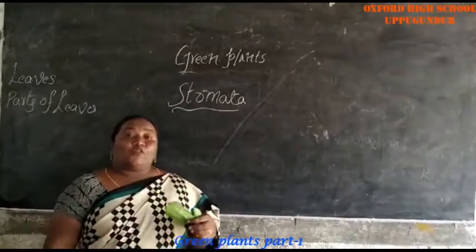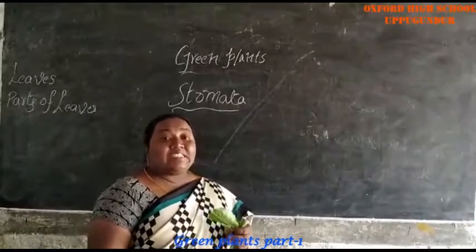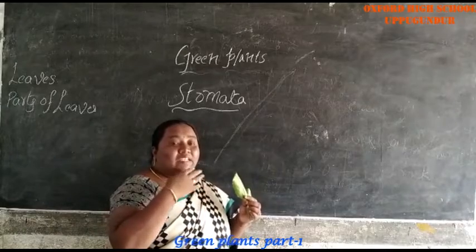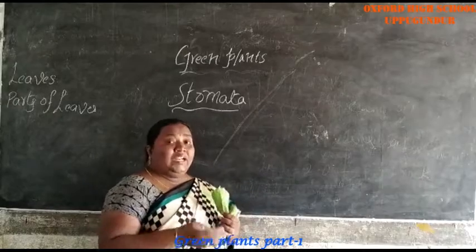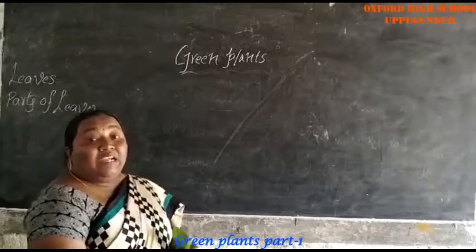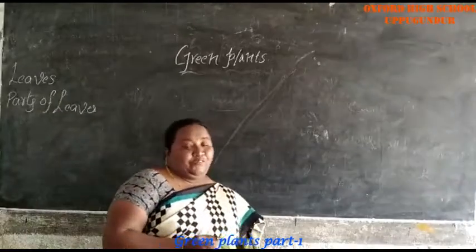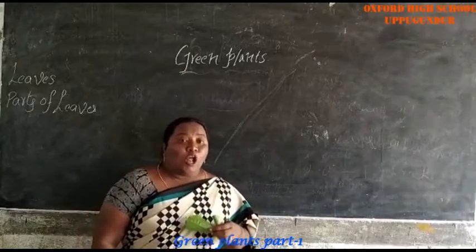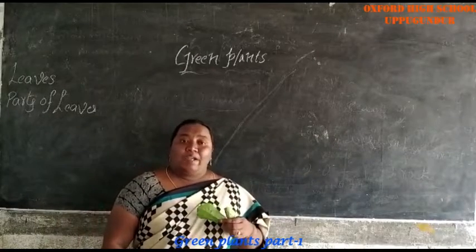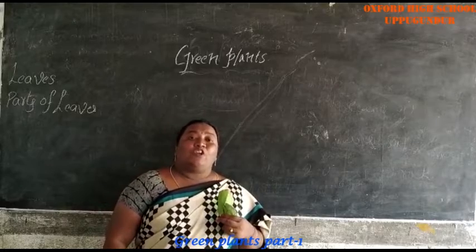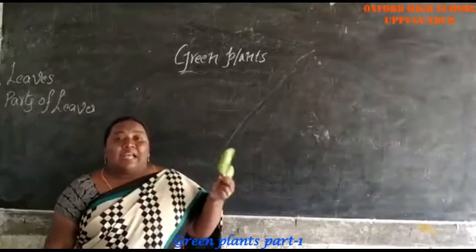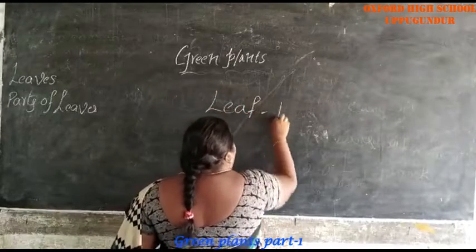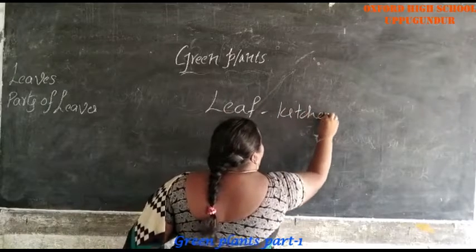In the stomata, the exchange of gases will take place. The leaf will absorb carbon dioxide gas and release oxygen. What is the function of a leaf? Generally, we call leaf as a kitchen of the plant. Why we call leaf a kitchen of the plant? Because leaf prepares the food for the plants. Leaf will prepare food for the plant, so it is called the kitchen of the plant.